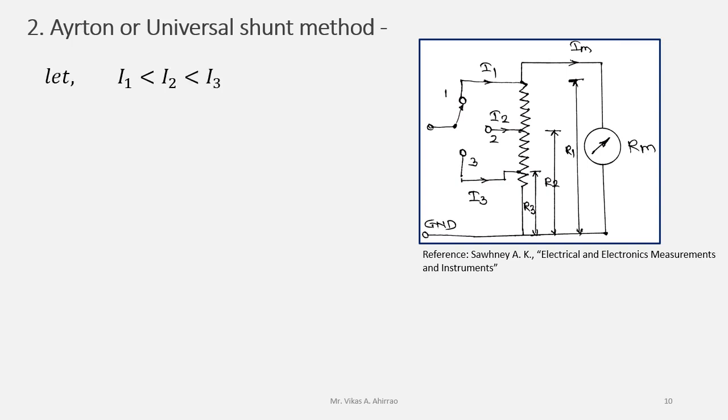Let three currents are having the relationship i1 less than i2 and it is also less than i3. When the switch will be at position 1 then current i1 will flow and that will get split or divided into the current which will flow through the complete shunt having the value r1 and meter current im.